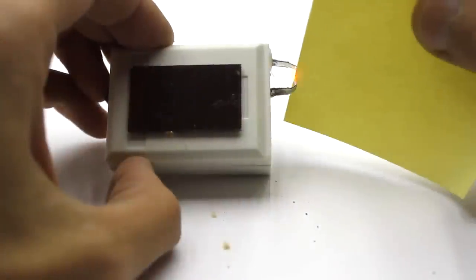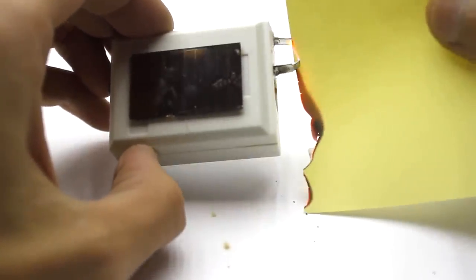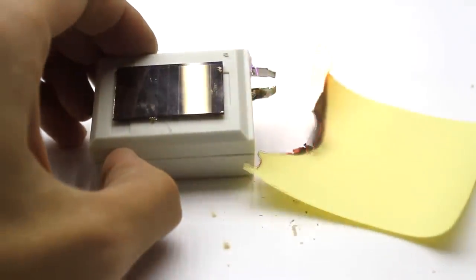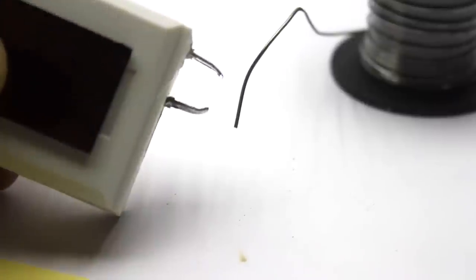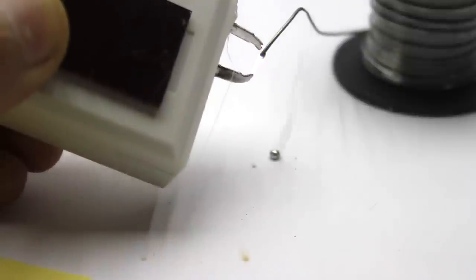The converter increases the voltage from the battery to several thousand volts. At the output we have a high voltage, high frequency arc, which is very hot, capable of melting even the copper wires through which it flows, so that it can easily ignite everything.